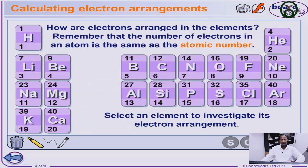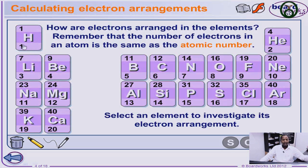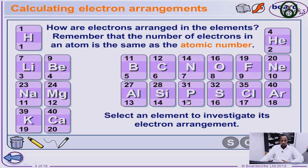Now let's look at the periodic table itself, making use of the first twenty elements. Hydrogen has a number of electrons of 1, because the atomic number is 1. So if the atomic number is 1, then the number of electrons is 1. And helium — because the atomic number is 2, the number of electrons is 2. This is how they are arranged according to the atomic number, which is also equal to the number of electrons: 1, 2.